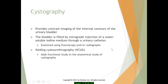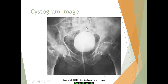Cystograms examine the bladder by injecting water-soluble iodine through a urinary catheter, typically performed under fluoroscopy with some radiographs taken. Sometimes a voiding cystourethrogram (VCUG) is performed, which studies the patient voiding or emptying the bladder. On the cystogram image, you can see the bladder nicely filled with contrast media and the Foley catheter.